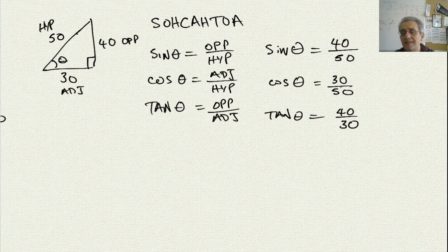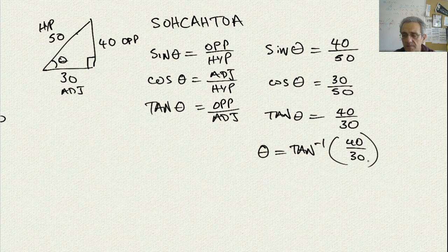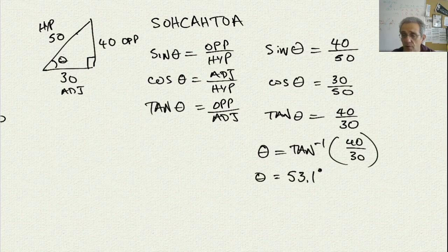Hopefully that makes sense. To get theta, since 40 and 30 were given to us, let's use tan. Theta equals the inverse tangent of 40 divided by 30. We can get our calculator and calculate this — the answer is that theta is equal to 53.1 degrees.